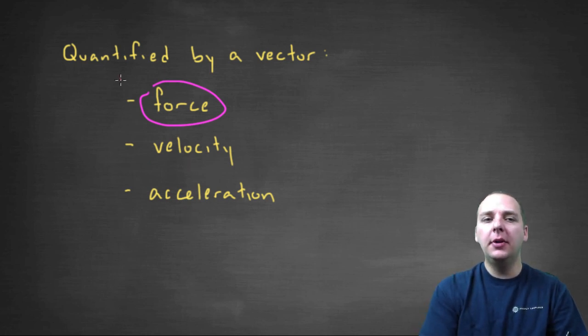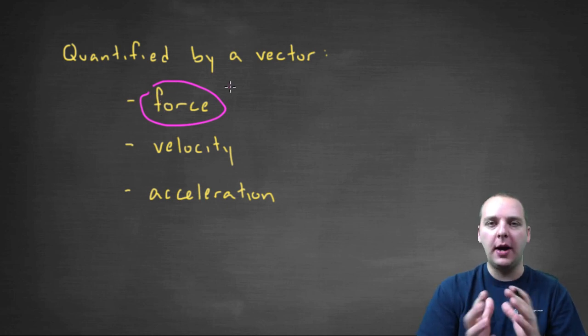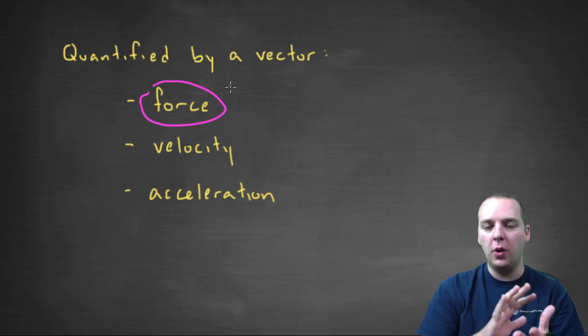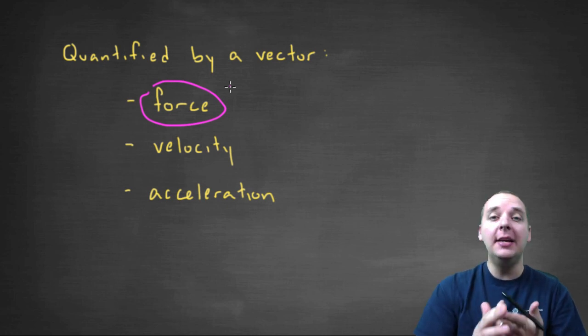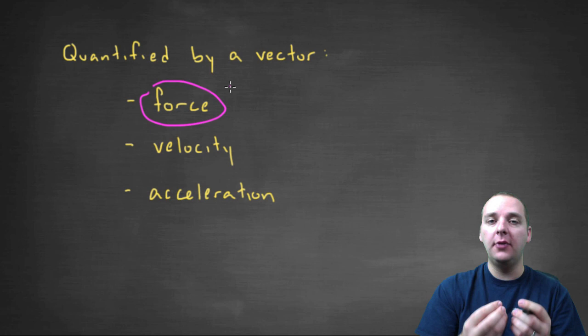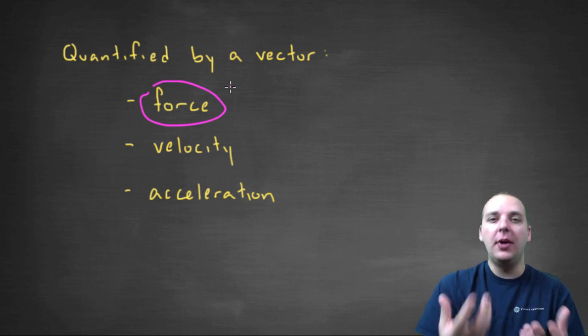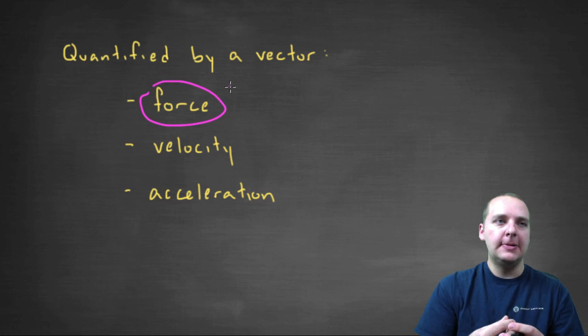Now, here's a couple examples of things that are not quantified by a vector, just to help you wrap your mind around what would not be a vector. Something like temperature. Temperature is quantified by a number, what's called a scalar, but it doesn't have a direction implied. Mass. Mass is another one. An object can have a certain mass, but the mass doesn't really have a direction that this mass is defined in.